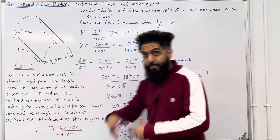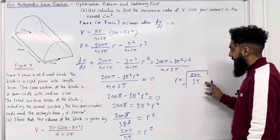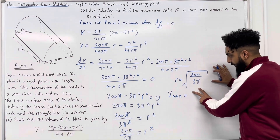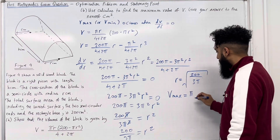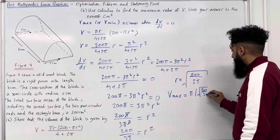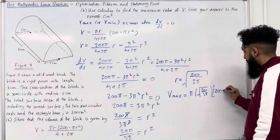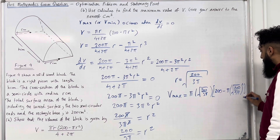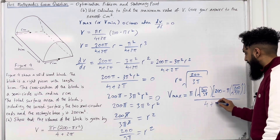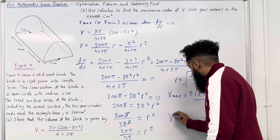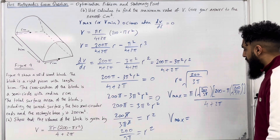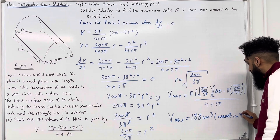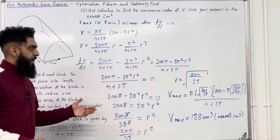V is maximized when r equals the square root of 200 over 3 pi. To work out V max, we substitute this r value into the volume formula: V equals pi multiplied by sqrt(200 over 3 pi) multiplied by [200 minus pi times (sqrt(200 over 3 pi)) squared] all over (4 plus 2 pi). Putting this into the calculator gives a maximum volume of 188 centimetres cubed to the nearest centimetre cubed. That completes part B.